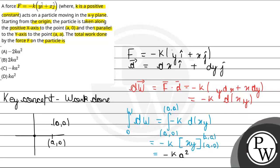Hence, option C is the correct answer, minus of k into a square. Hope you understood it well. Best of luck.